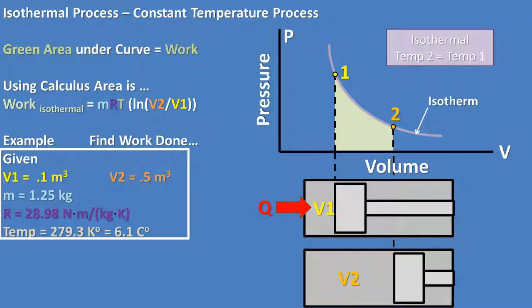Now let's do an example. We are given volume one of 0.1 meters cubed, volume two of 0.5 meters cubed, mass of the gas, which in this example will be air, of 1.25 kilograms, gas constant of air of 28.98 joules per kilogram degree Kelvin, and absolute temperature of 279.3 degrees Kelvin, which is 6.1 degrees Celsius.